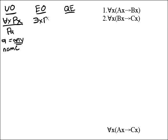Existential out looks very similar. It says if you have there is an x Px, you get to drop the quantifier and replace the variable with a name.